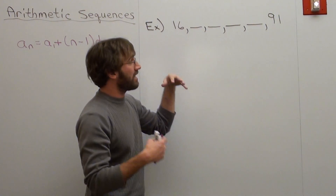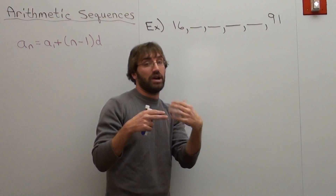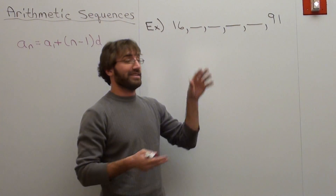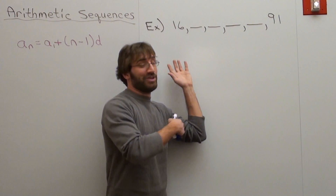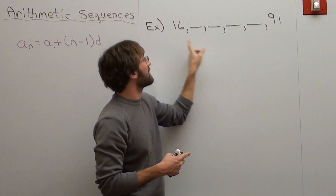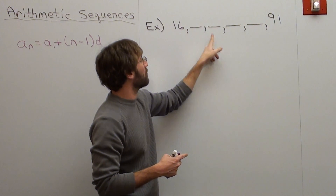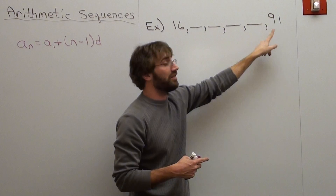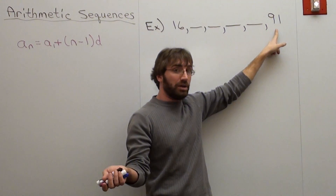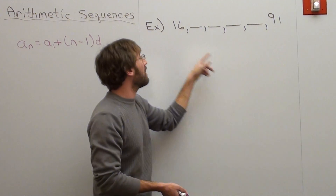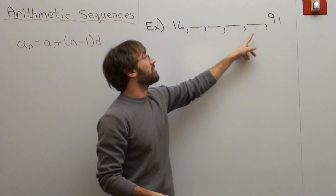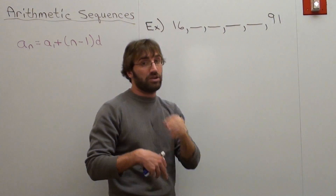So I've got this arithmetic sequence, and I'm going to tell you it is an arithmetic sequence. It's got one, two, three, four, five, six terms. The sixth term is 91 and the first term is 16. Basically, what I want you to do is figure out the terms in the middle.